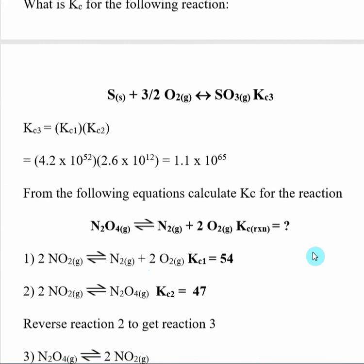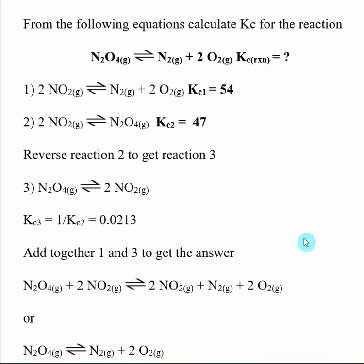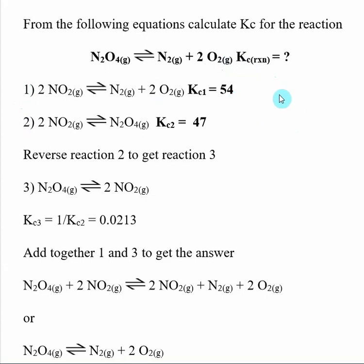Let's take this further with a common exam question. I have a reaction and I want to find its K value. I'll give you multiple reactions with their K values, and you need to combine them to arrive at the target reaction. Generally you'll have to take multiple steps — reversing, multiplying by two, adding reactions together — using all of the ideas we've discussed. On an exam they might give you four or five reactions, and you need to carefully work out the steps needed to reach the target reaction.